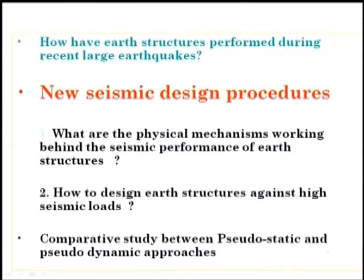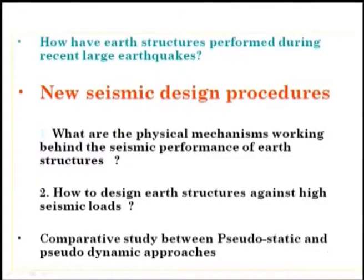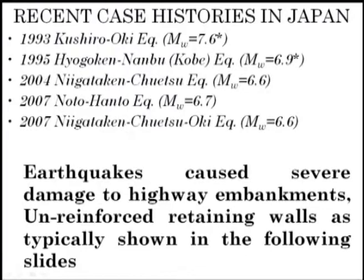New seismic design procedures address: what are the physical mechanisms working behind the seismic performance of earth structures? How to design earth structures against high seismic loads? A comparative study of different design method approaches. Recent case histories in Japan from 1993 to 2007 involve earthquake magnitudes varying from 6.6 to 7.6. Earthquakes caused severe damage to highway embankments and unreinforced retaining walls, as shown in the following slides.